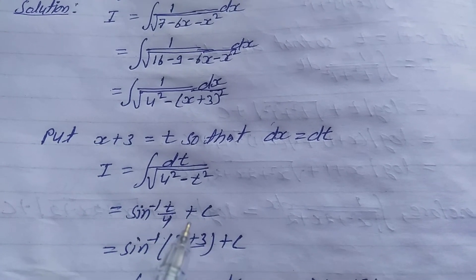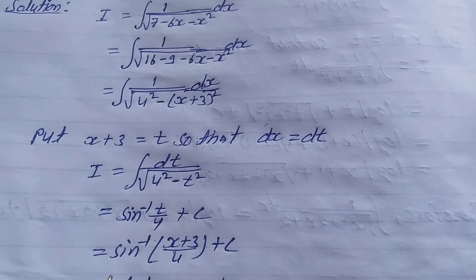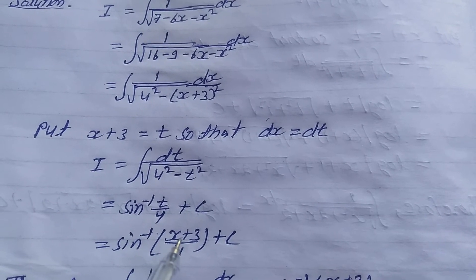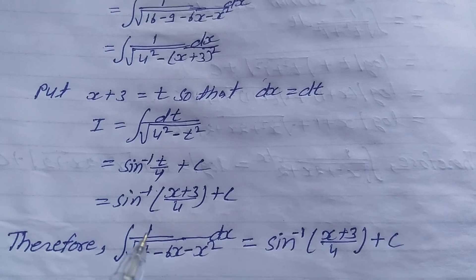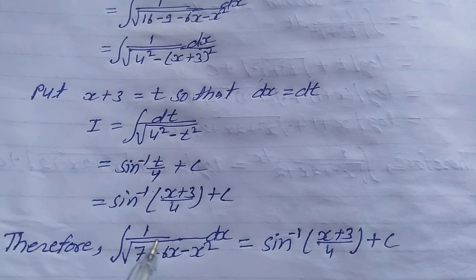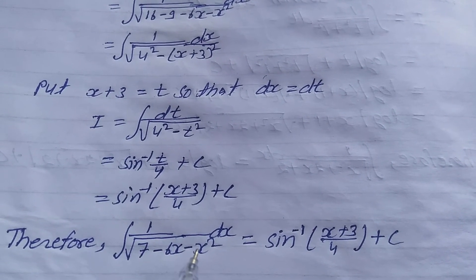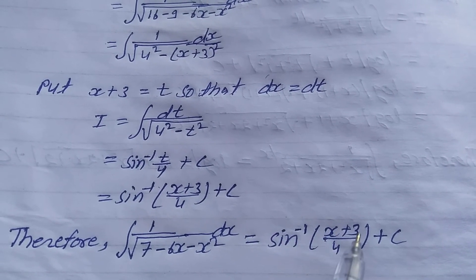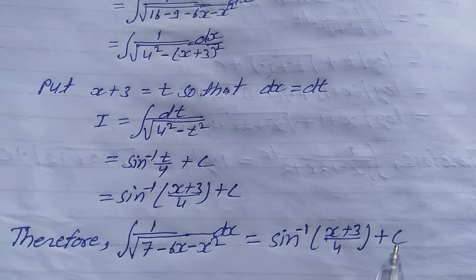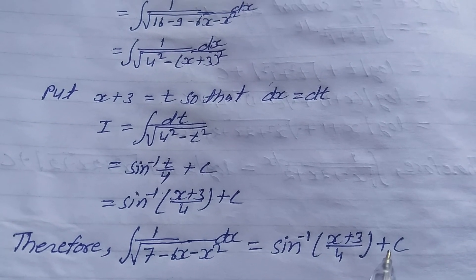Put the t value in terms of x, so this is equal to sin inverse of x plus 3 by 4 plus c. Therefore, integration of 1 upon root of 7 minus 6x minus x square dx is equal to sin inverse x plus 3 by 4 plus c. That is the solution.